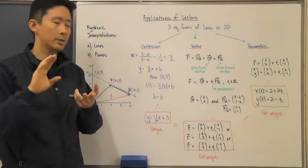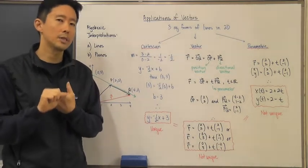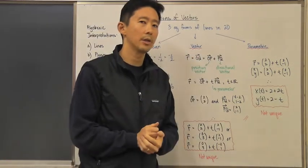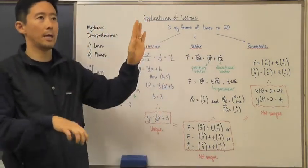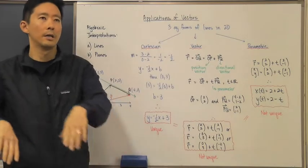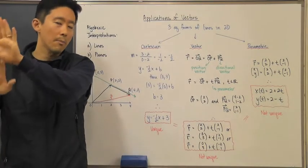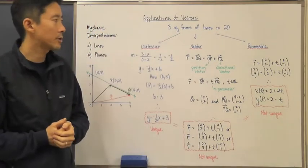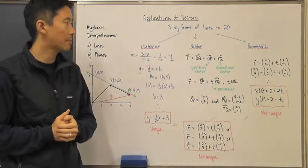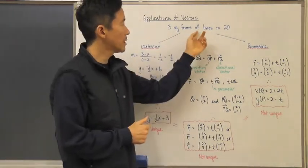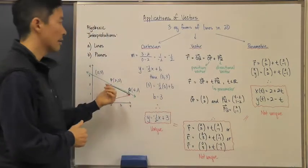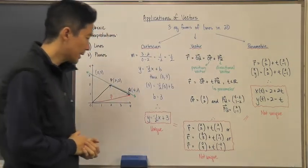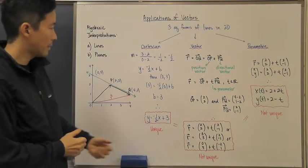This gives us two separate equations: x and y are both dependent upon the parameter t, which is why they're called parametric equations. Both the independent and dependent variables depend on the parameter t — that's the parametric form of the equation of the line in two dimensions.